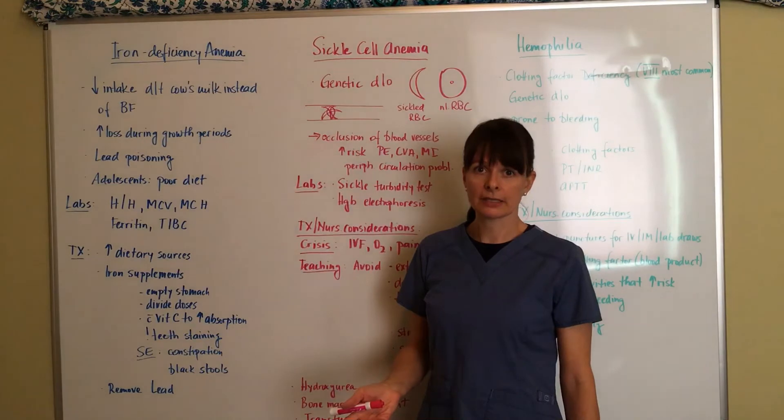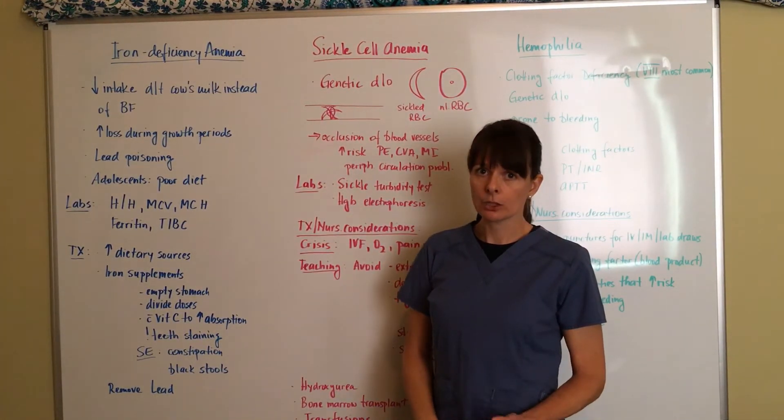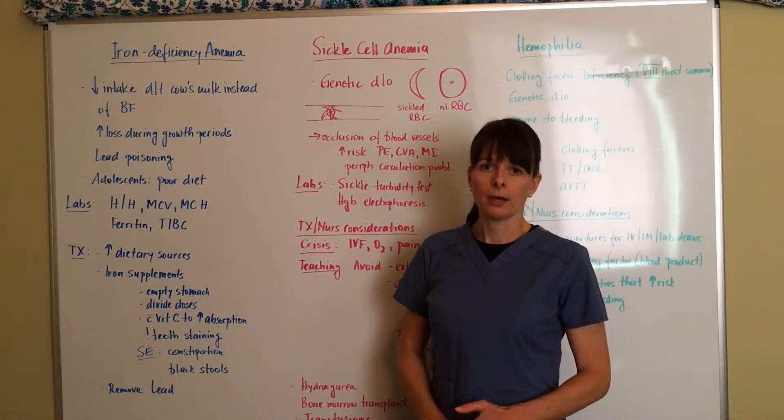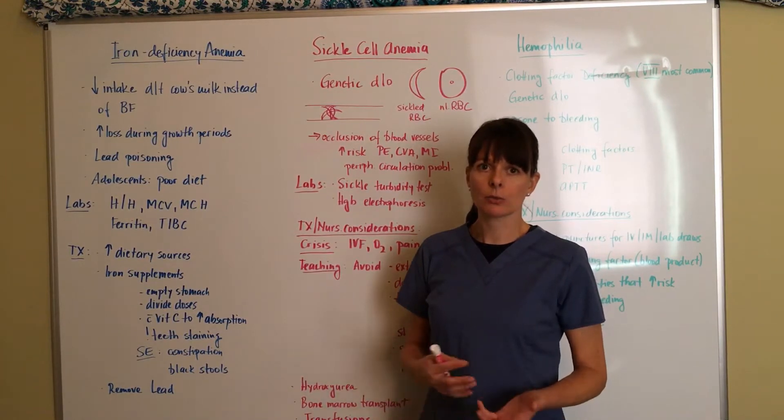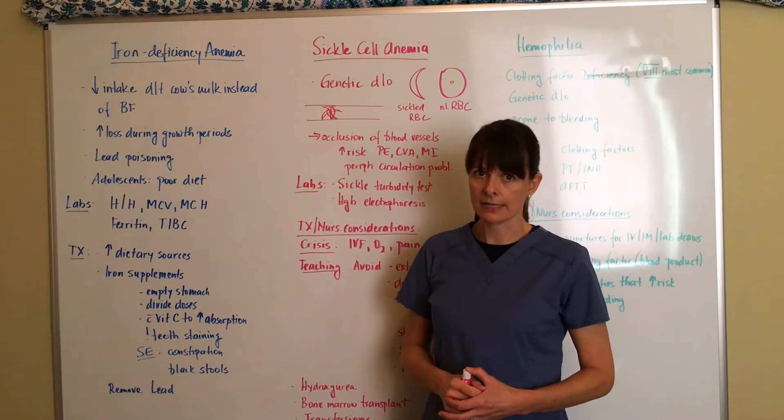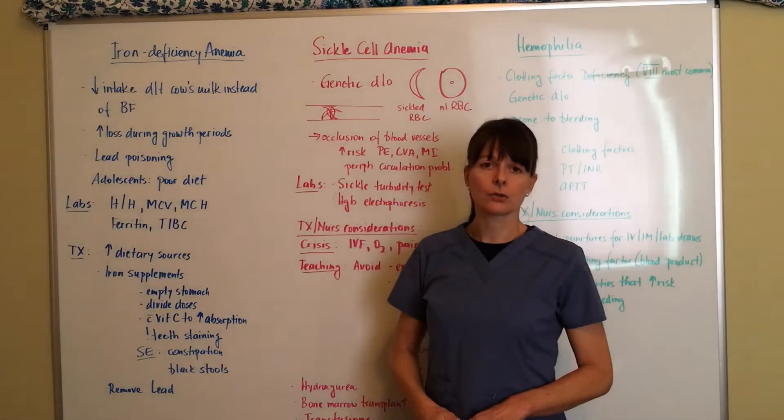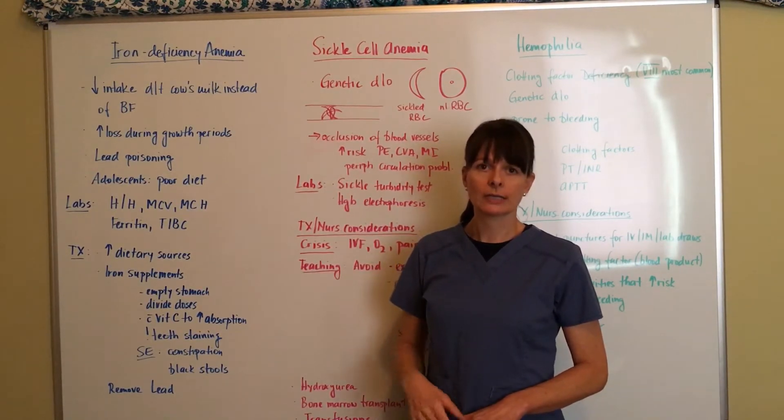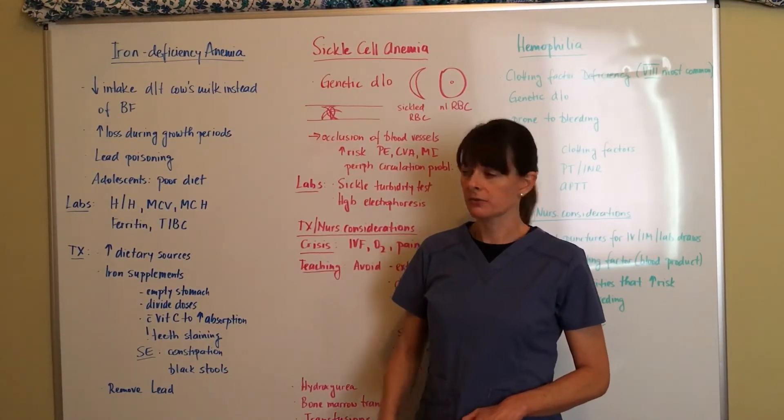Now what do we do if the patient is iron deficient? First of all, we need to increase dietary sources. That should always be your number one treatment because we don't want to unnecessarily give medication when it can be solved with diet. If it's caused by cow's milk and the child is less than a year old, we want to provide education to the parents and explain why cow's milk is not ideal for their infants and provide them with alternatives.